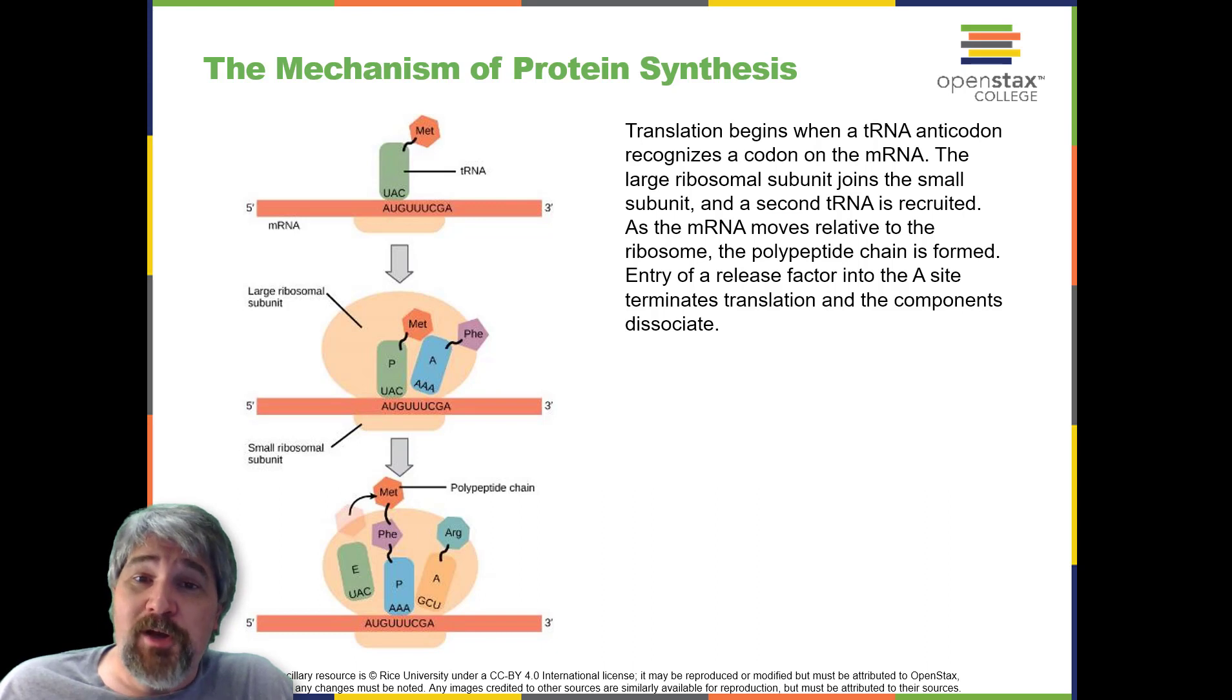In prokaryotes and eukaryotes, the basics of polypeptide elongation are the same, so we will review elongation from the perspective of E. coli. The large ribosomal subunit of E. coli consists of three compartments.